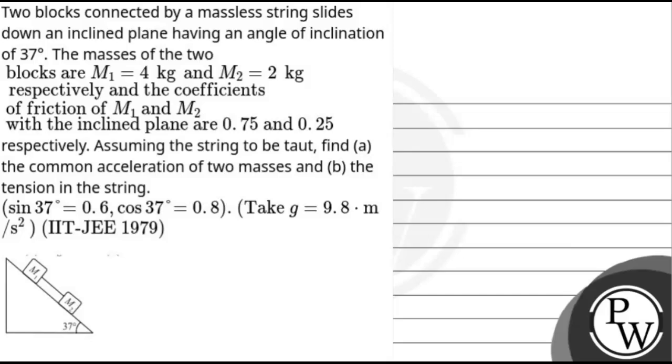Hello, let's read the question. The question says, two blocks connected by a massless string slide down an inclined plane having an angle of inclination of 37 degrees.